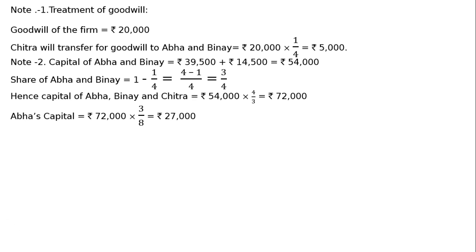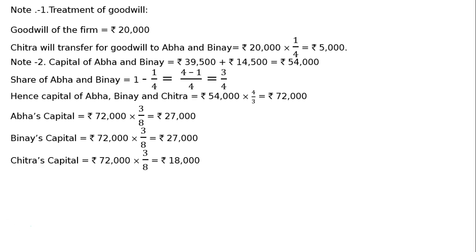Abha's new capital equals Rs. 72,000 multiplied by 3/8, that is Rs. 27,000. Vinay's new capital equals Rs. 72,000 multiplied by 3/8, that is Rs. 27,000. This is the new capital, because the question states that Chitra will bring proportionate capital — sufficient capital for one-fourth of the total capital of the new firm. These are the key wordings to trigger this calculation.